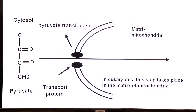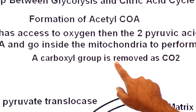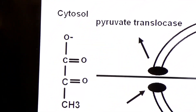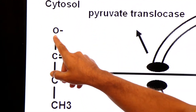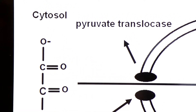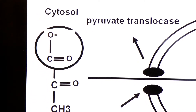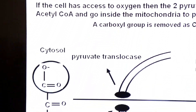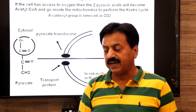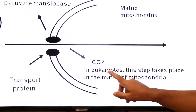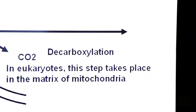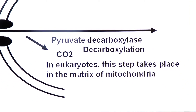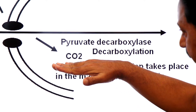The carboxyl group is removed from this pyruvate as carbon dioxide. Focus here — this carbon dioxide is removed. This process is called decarboxylation, and the enzyme used for decarboxylation is pyruvate decarboxylase. So carbon dioxide has been removed.